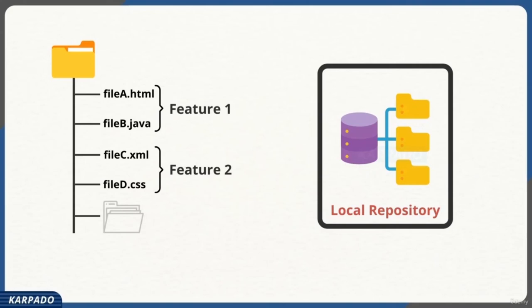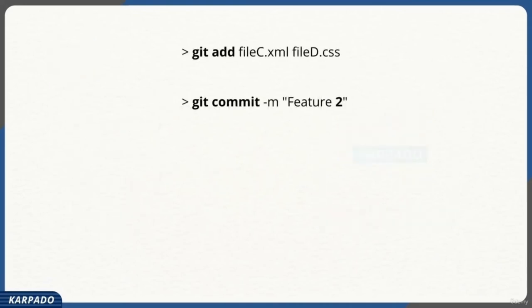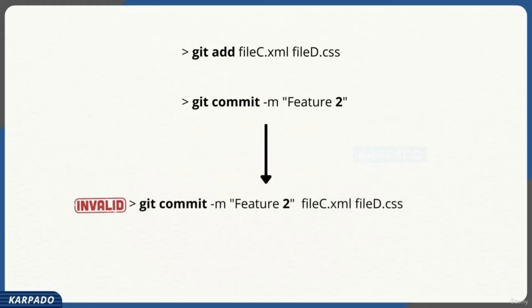When I started using Git, I asked a local GitHub community: why do we need two steps to commit changes? Why can't we just have a single command like 'git commit -m message' followed by a list of files to commit? I didn't get a satisfactory answer. In fact, other version control systems like Mercurial or Subversion don't have this additional step of adding files before committing.